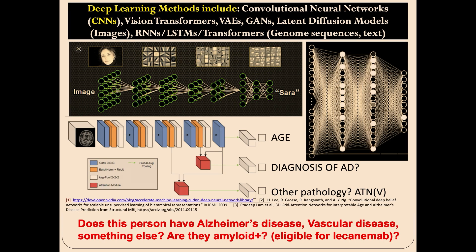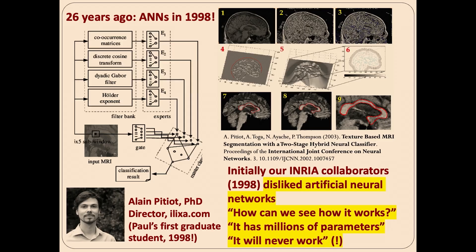Let's say in the lab you want to let in a lab member called Sarah, and you have a lot of pictures of Sarah. You'd like a neural network to decide whether this is a picture of Sarah or somebody else. A CNN will distill progressively more abstract features from pictures of her face and try to find the ones that are distinctive of her. In medical imaging, we might be predicting a person's diagnosis or something about them like their age.